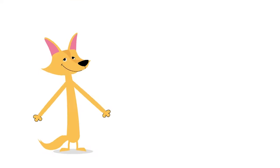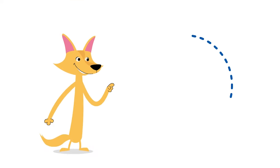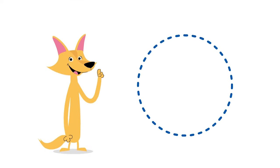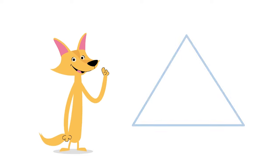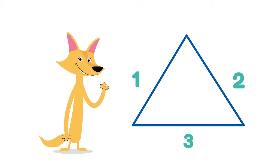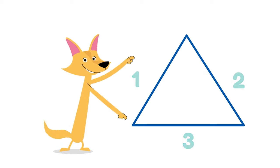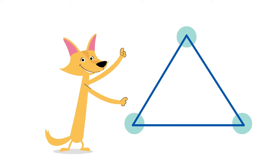Hey! A circle is one line that goes all the way around. There are no corners. A triangle has three sides and three corners.